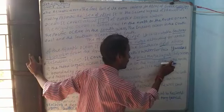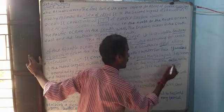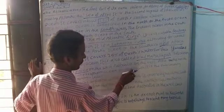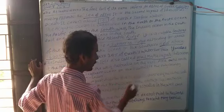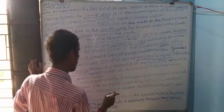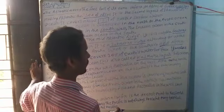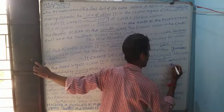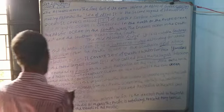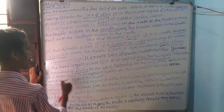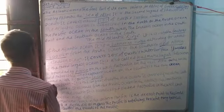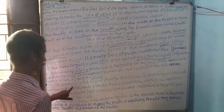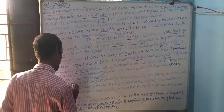Asia is on the north, and Antarctica and the Southern Ocean are on the south. It is the only ocean named after a country.